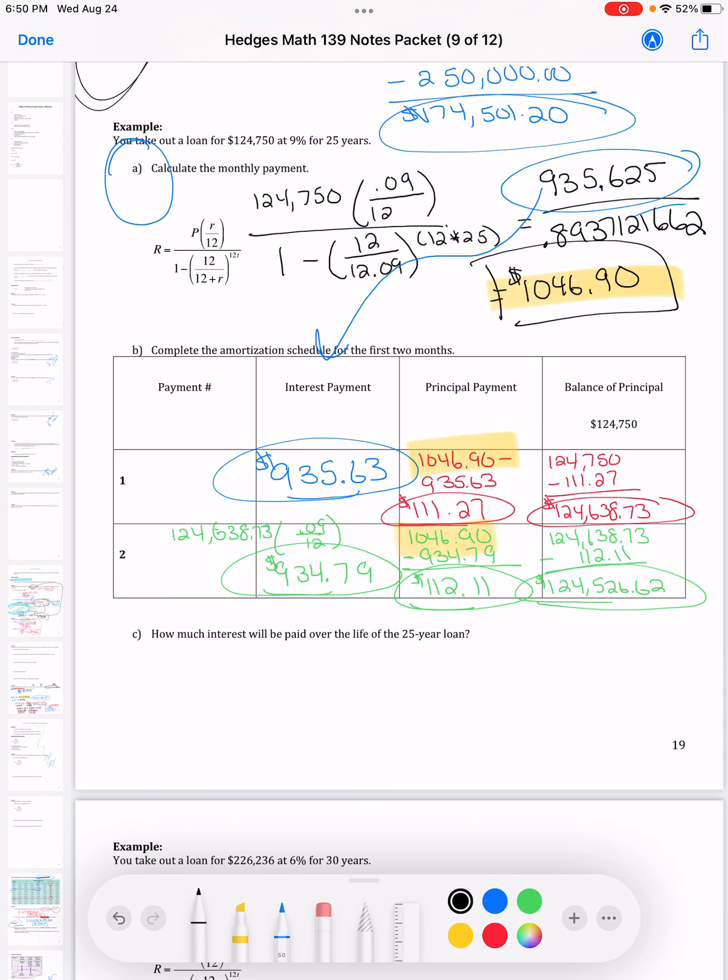Coming back from pause, and if you haven't hit pause, go ahead and do it. It's my monthly payment every month for 25 years. That gives me my total amount. That's the total amount that I gave into the bank over the loan period. The bank originally gave me $124,750.